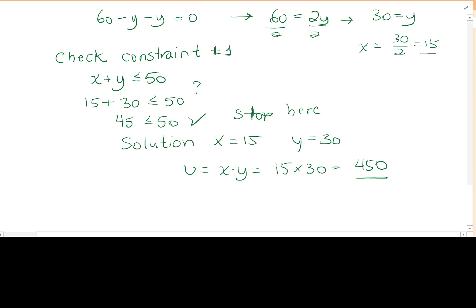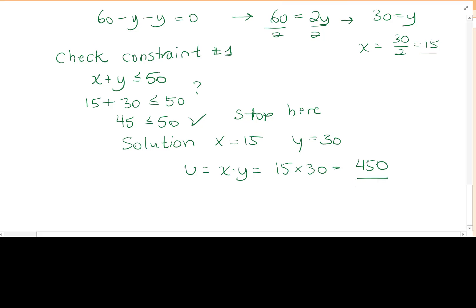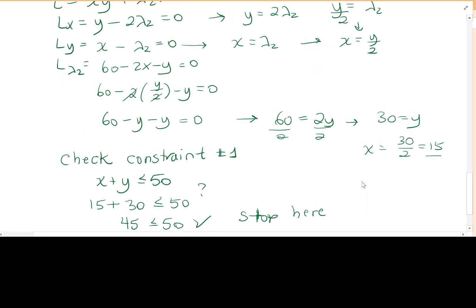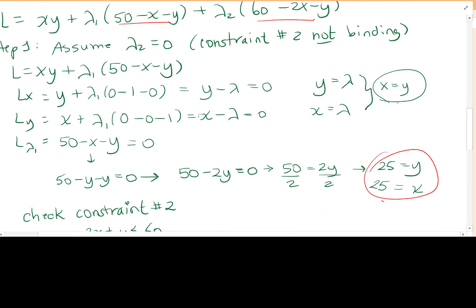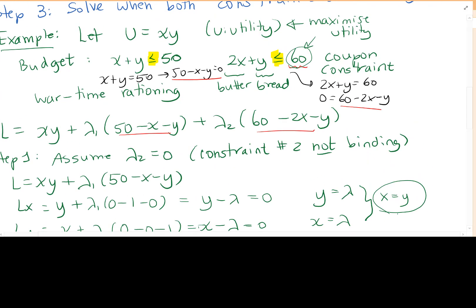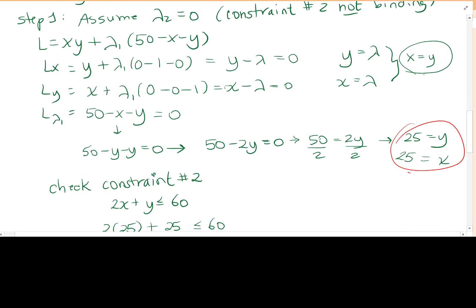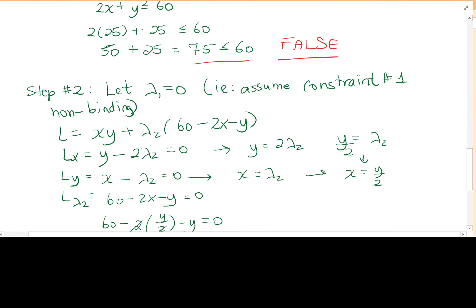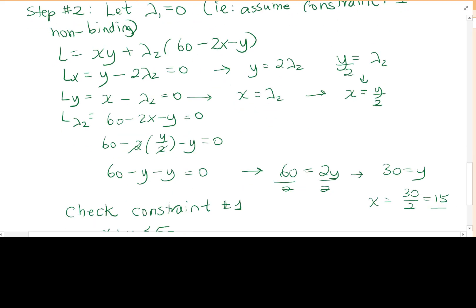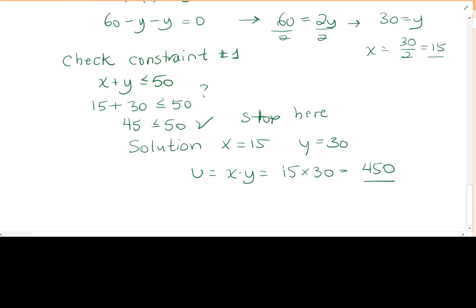To recap: in the Kuhn-Tucker method we re-run the Lagrange several times, assuming different constraints are binding. Step one assumed we had enough coupons but not enough money; step two assumed we had enough money but not enough coupons. If neither worked, we'd move to step three where both constraints are binding simultaneously.